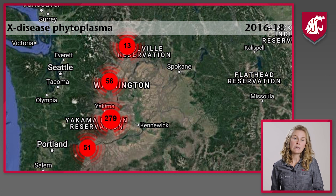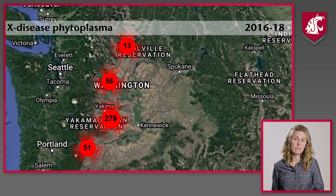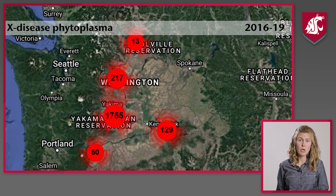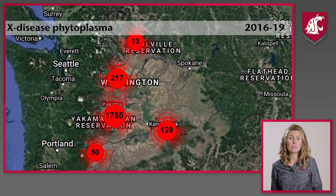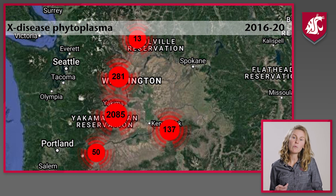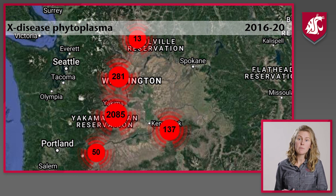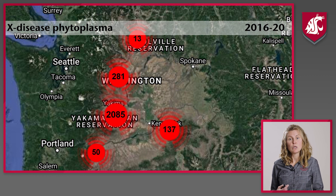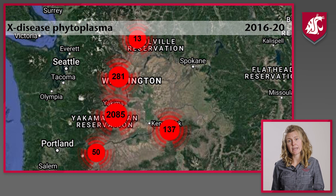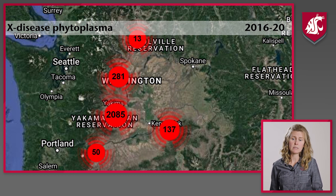We're really worried about X disease because those numbers have been increasing at a dramatic rate over the last couple of years. Back in 2017, we saw about 10% of samples positive — really only a few hundred. By 2019, that was up to 44% of samples, with more than 2,600 positive samples throughout the state. We have less data in 2020, but we were around 36% positive. So we haven't yet started to flatten out that curve, and we're still at an epidemic level with X disease throughout the state.